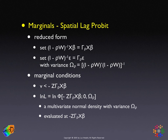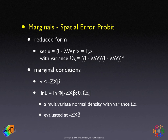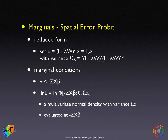The spatial error probit is slightly different because we no longer have the reduced form. The bounds are Z x beta as before, and the only distinguishing aspect is the variance-covariance matrix. We use the same notation, but the error term becomes gamma sub lambda since lambda is the parameter in the error model. The marginal conditions are again v less than negative Z x beta, just as in the classic probit — no need for the inverse transformation on x beta. The log likelihood is a multivariate normal density evaluated at negative Z x beta with mean zero and the corresponding variance-covariance matrix with the inverse.